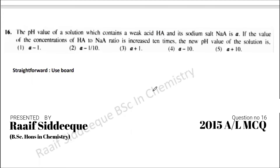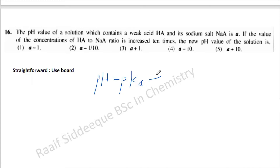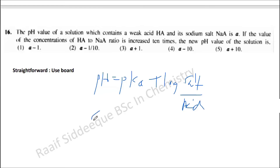This is a straightforward question using the Henderson-Hasselbalch equation directly. pH is equal to pKa plus log of salt over acid concentration. They are telling us the pH of a weak acid in salt is 'a', so a equals pKa plus log of salt over acid.